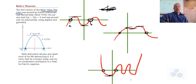So I challenge you to draw some kind of continuous polynomial describing function where this doesn't hold true. And it's found that it does. Rolle distrusted calculus, this is the interesting part, and spent most of his life denouncing it. He was not a big calculus fan. It's interesting and ironic that he is known today only for an unintended contribution to a field he tried to suppress.